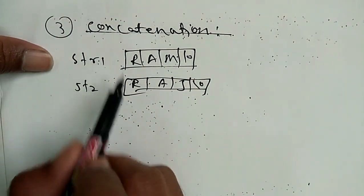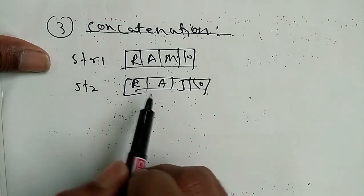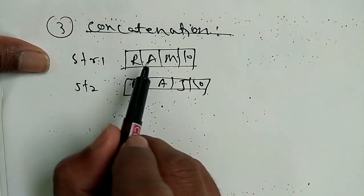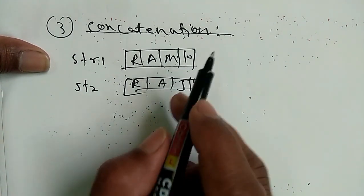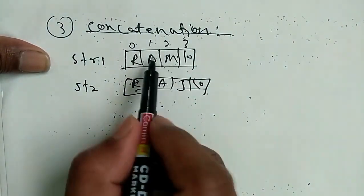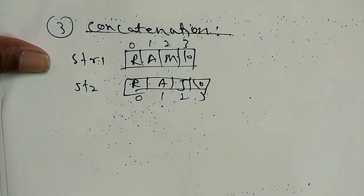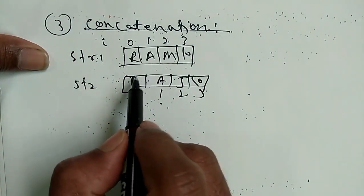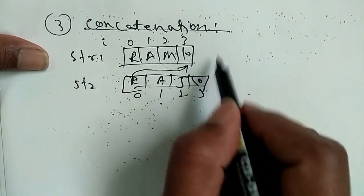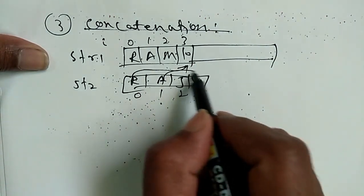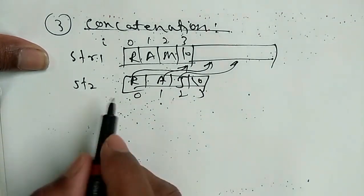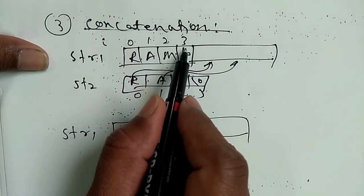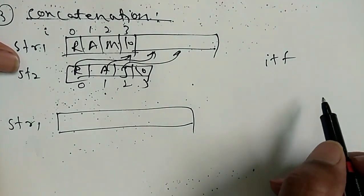The third function is concatenation — attaching one string with another. We attach string 2 to string 1. For example, attaching 'Raj' to 'Ram' gives 'RamRaj'. We use index values 0, 1, 2, 3 for each string. We take index I, and using I++, we move I to the end of string 1 by using: while str1[I] is not equal to backslash 0, I++.